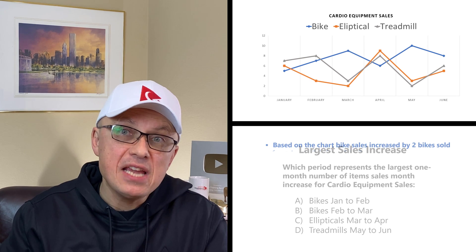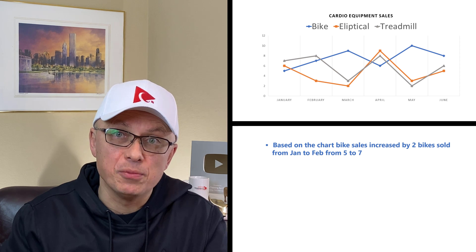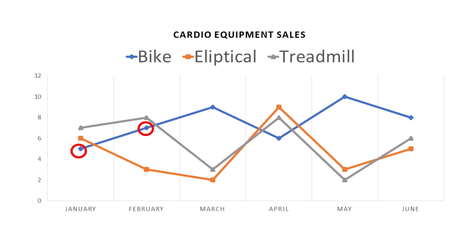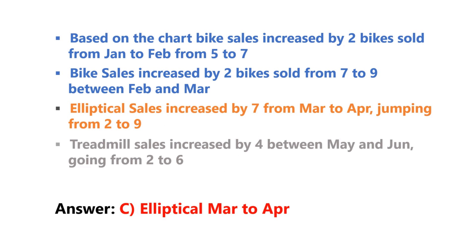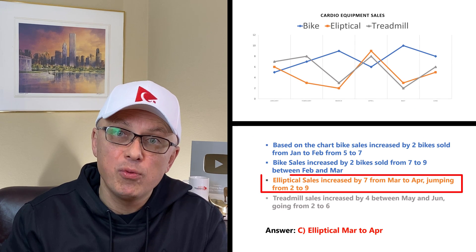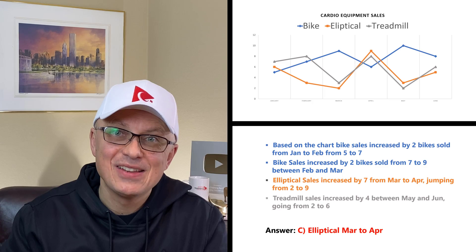Based on the chart: bike sales increased by 2 from January to February (5 to 7); bike sales also increased by 2 from February to March (7 to 9); elliptical sales increased by 7 from March to April (2 to 9); and treadmill sales increased by 4 from May to June (2 to 6). So the correct answer is choice C: elliptical sales from March to April, with a jump of 7. Hopefully you've nailed this question.